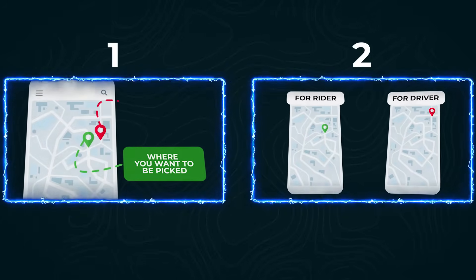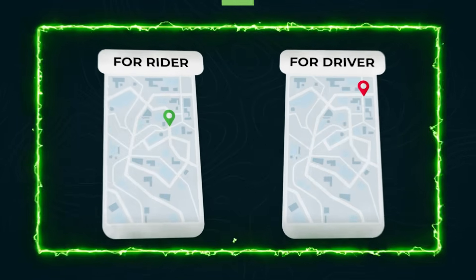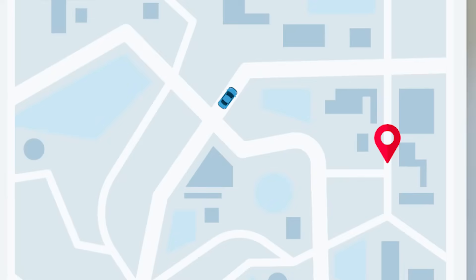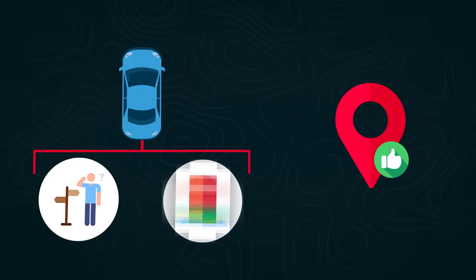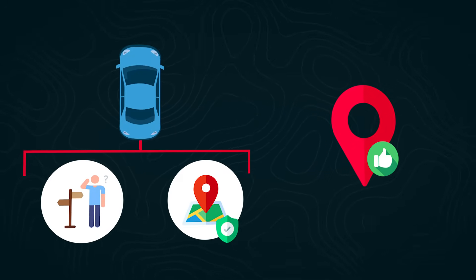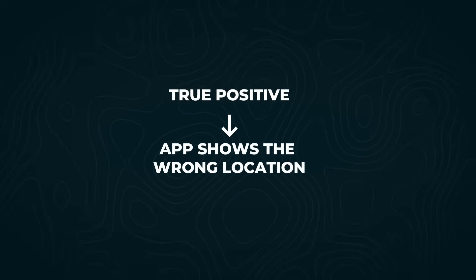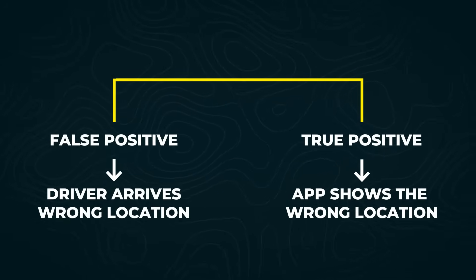If you jump right in and chose one scenario, you wouldn't have clarified your thought process with the interviewer and they would assume you dive into problems without thinking them through first. We're going to interpret the original issue as the second scenario — the app shows the rider one spot and shows the driver another spot. We're not going to focus on the UI issue of the bouncing location. We'll make that assumption to the interviewer. We also need to clarify whether the driver is actually showing a wrong map location versus just ending up at a different spot because it's safer to pull over.